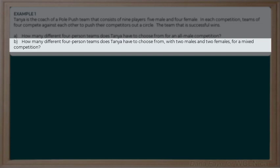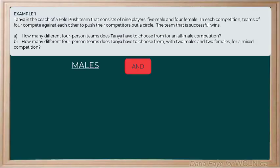Let's take a look at part B. In this scenario, we're looking to make a mixed team — that means we need two males and two females. Notice the word 'and' is important here; it indicates we're going to need to use the fundamental counting principle. We're going to choose two males and two females to create this one team. We have five males to choose from and we're putting two on the team, and we have four females to choose from and we're putting two on the team. So we need to do five choose two and four choose two.